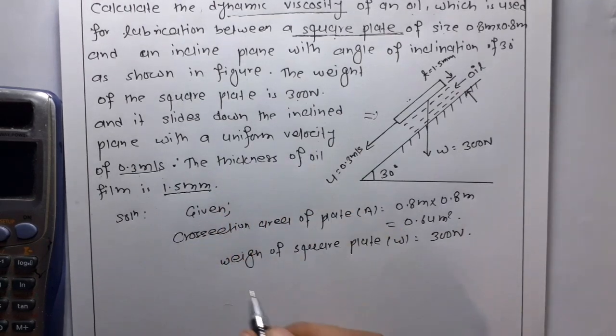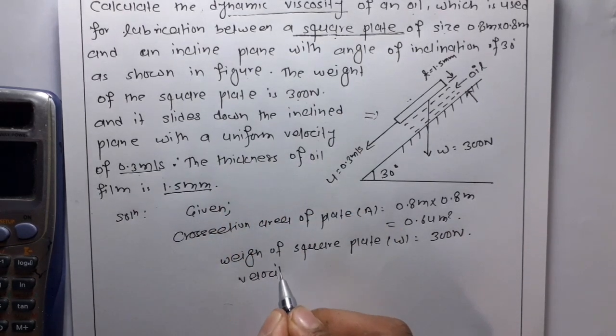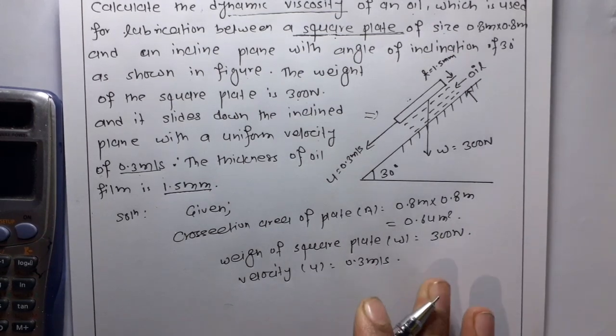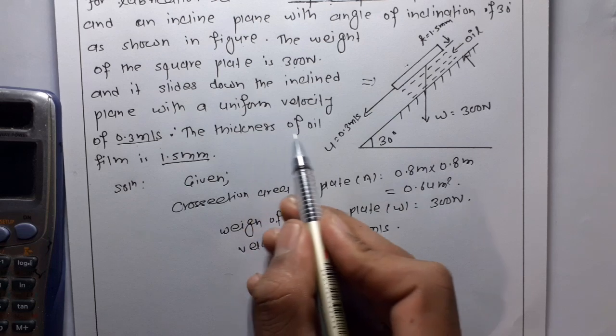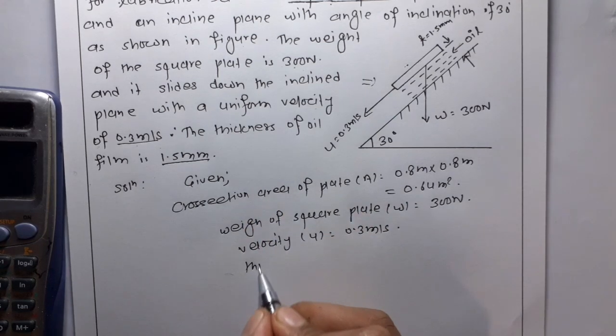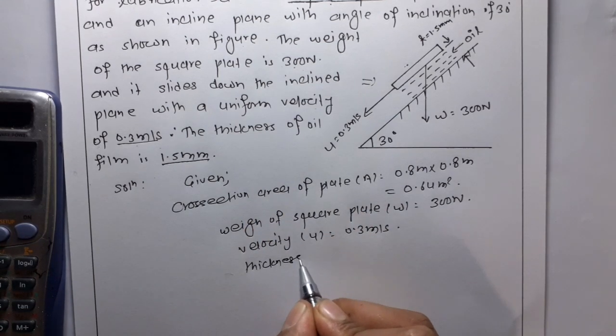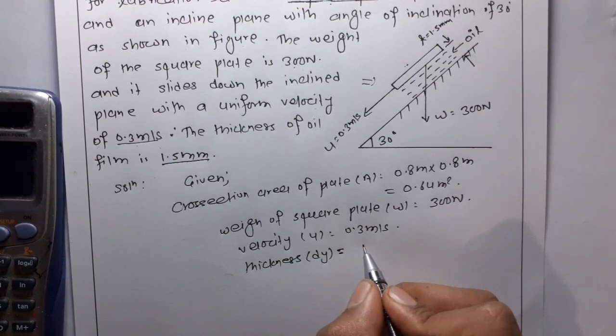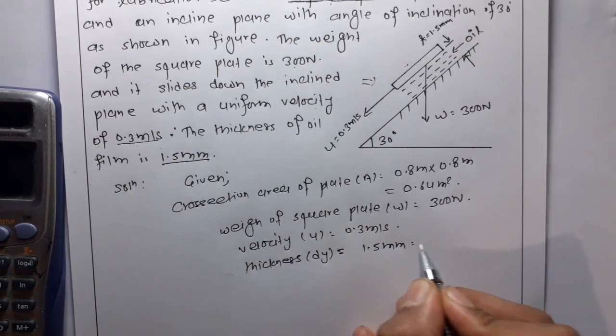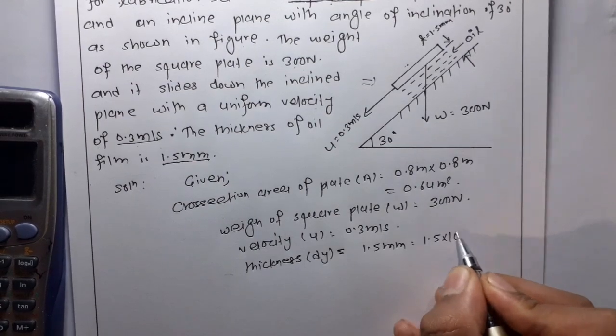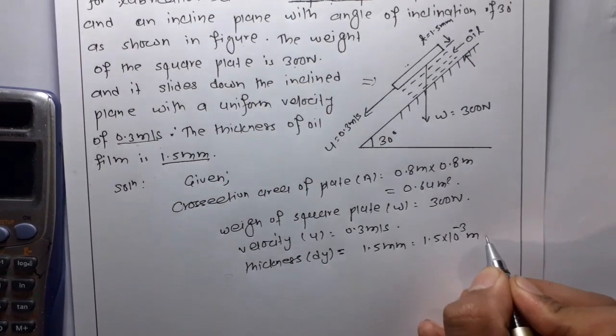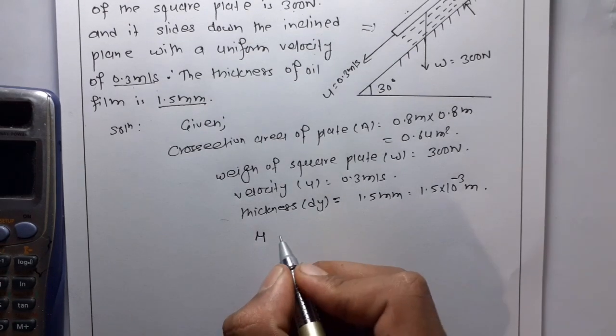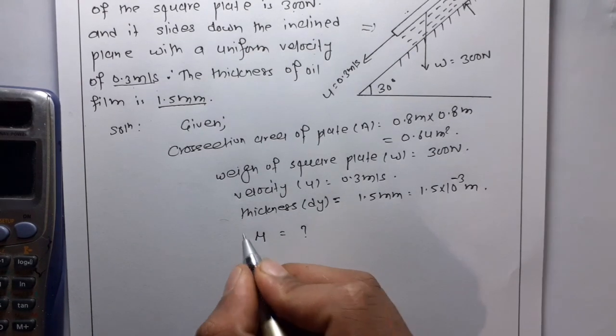And velocity U is equal to 0.3 meter per second and the thickness of the oil film T y is equal to 1.5 mm, so this is 1.5 into 10 to the power minus 3 meter and we have to find dynamic viscosity.